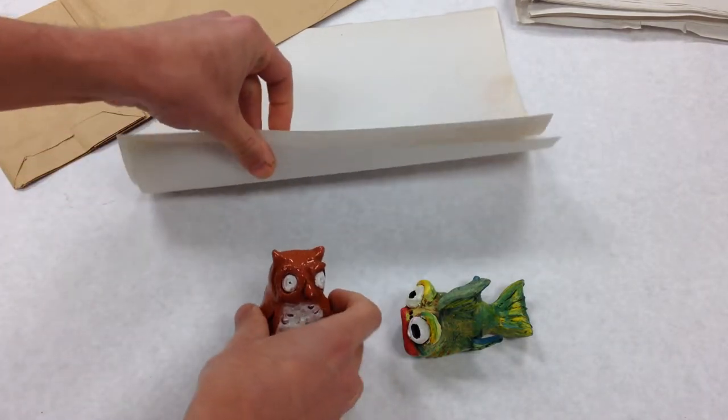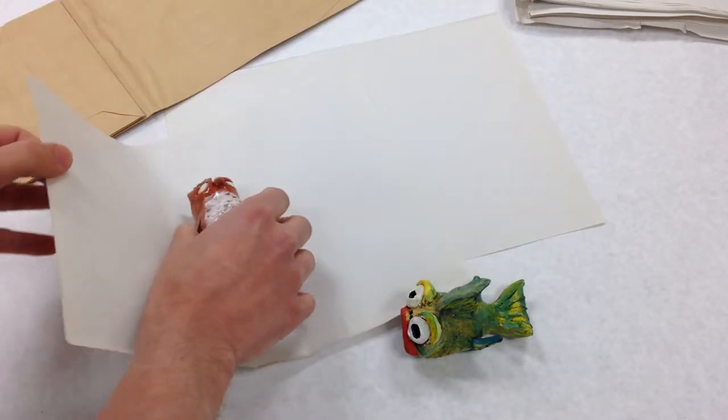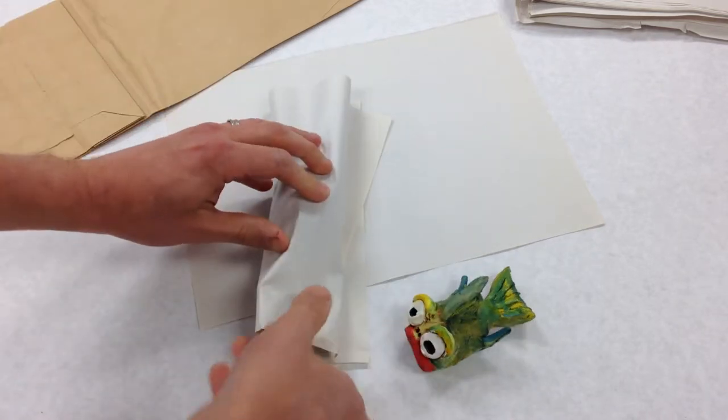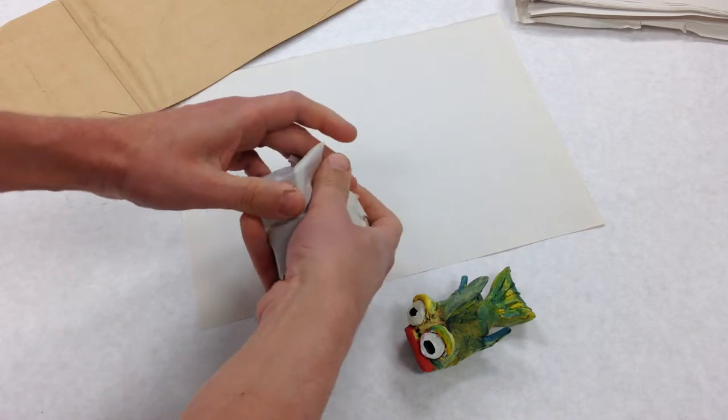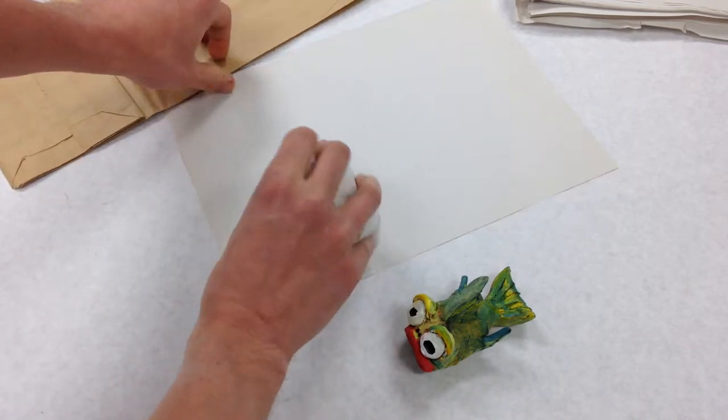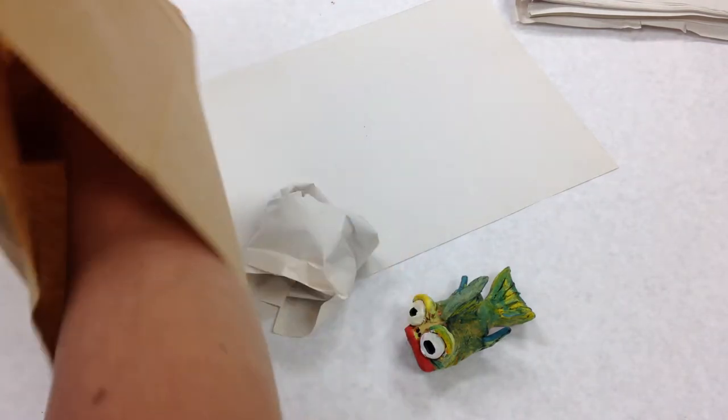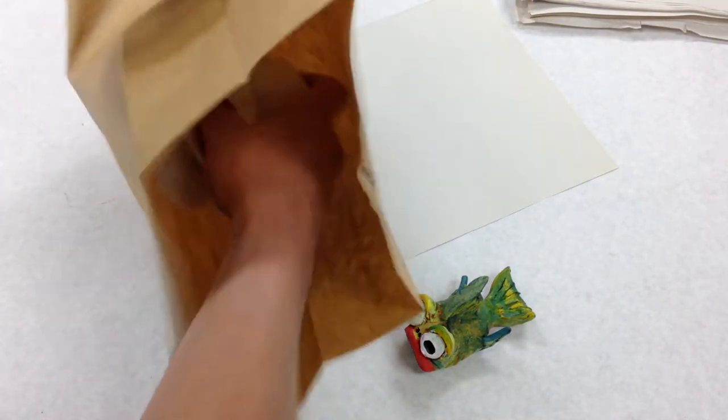So you're gonna take a piece of paper and you're gonna put your owl in it. You fold it, kind of roll it, and then you're gonna fold this part and you're gonna fold this part. Then you just take your paper bag and you can put it in there. You don't want to drop it in, just place it in there.